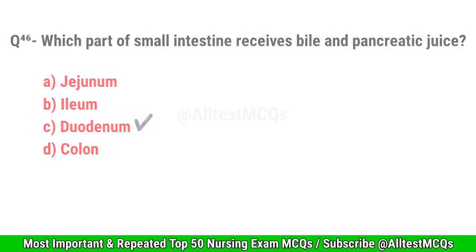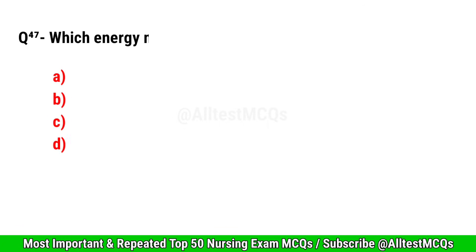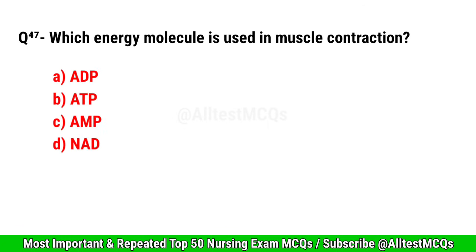Question No. 47. Which energy molecule is used in muscle contraction? Right option is B. ATP.